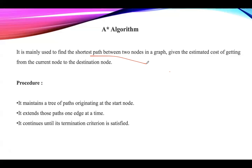Coming to the working procedure: A* maintains a tree of paths originating at the start node and extends those paths one edge at a time. This process is repeated until the termination condition is satisfied.